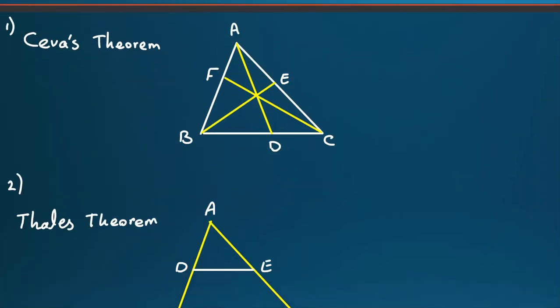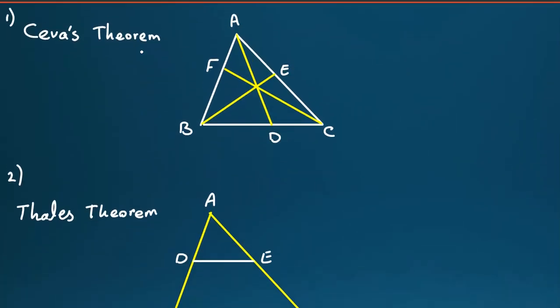So before solving the problem, let's go to the theorems and ideas. Ceva's theorem says suppose AD, BE, and CF, three arbitrary points are concurrent, means they pass through a point, for example P, if and only if AF over FB...